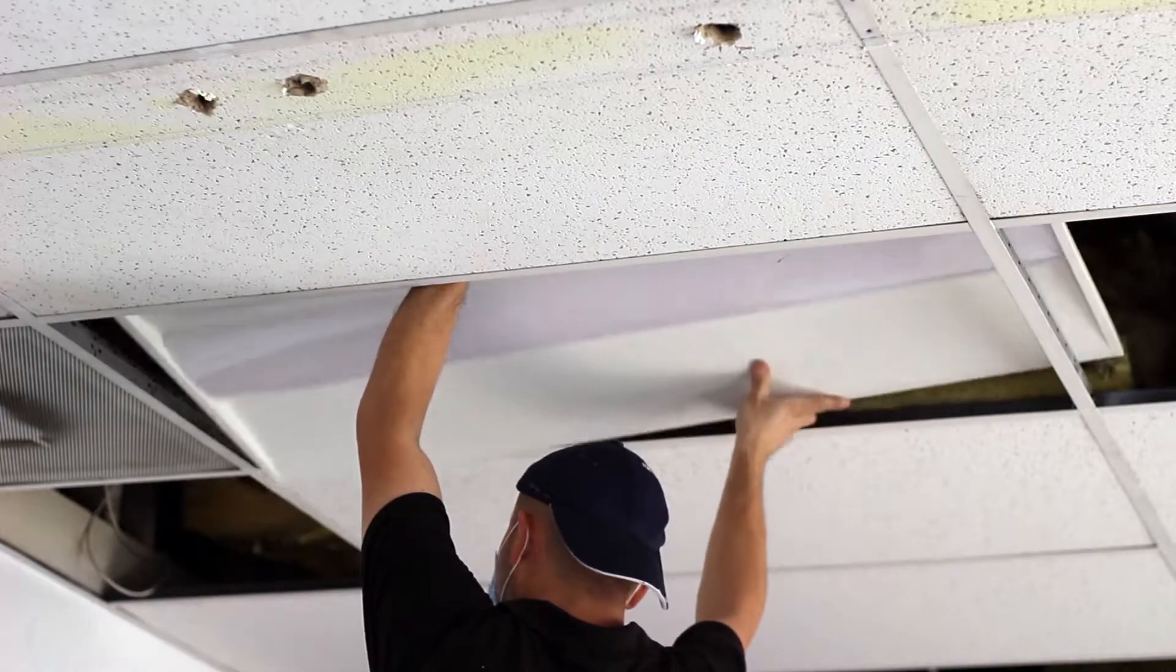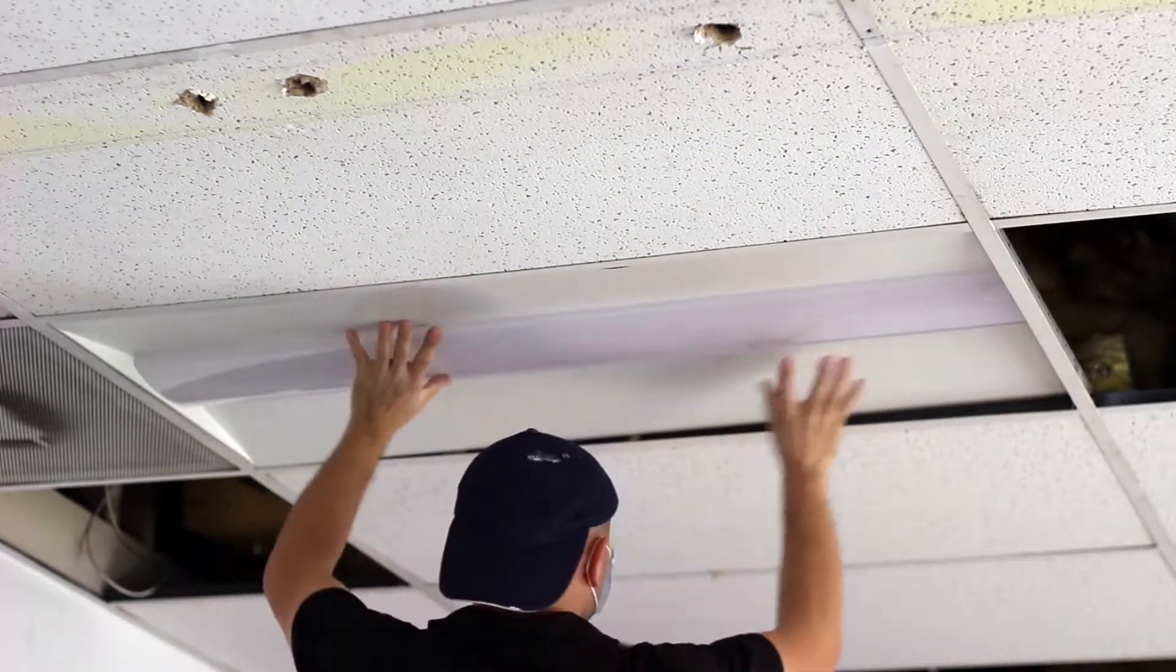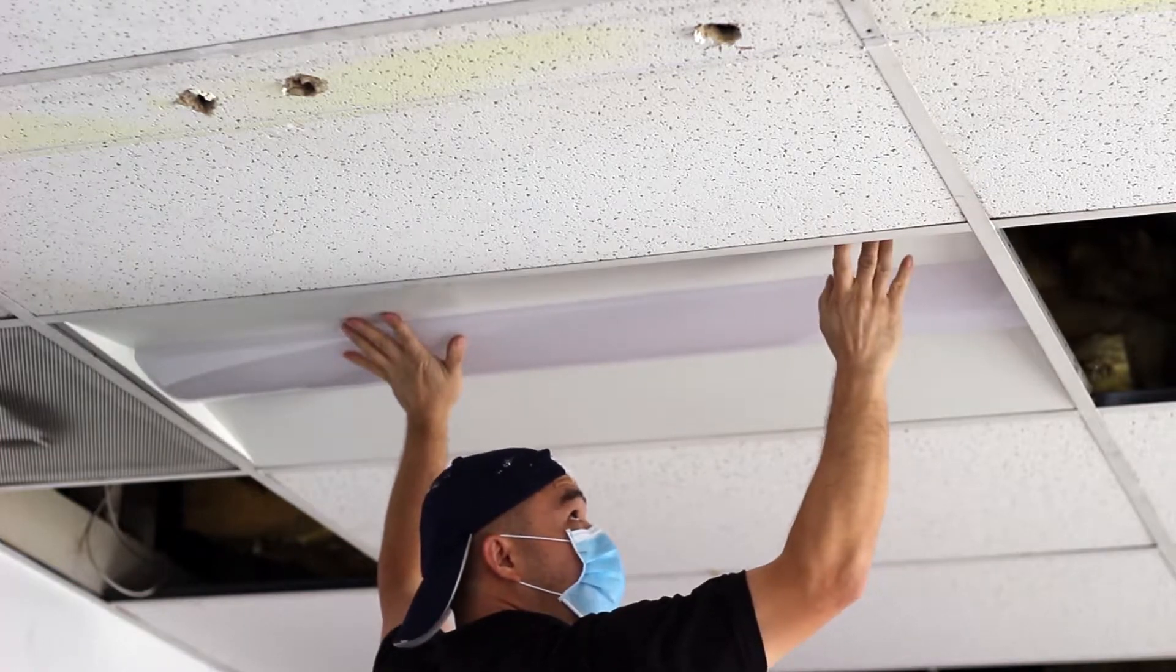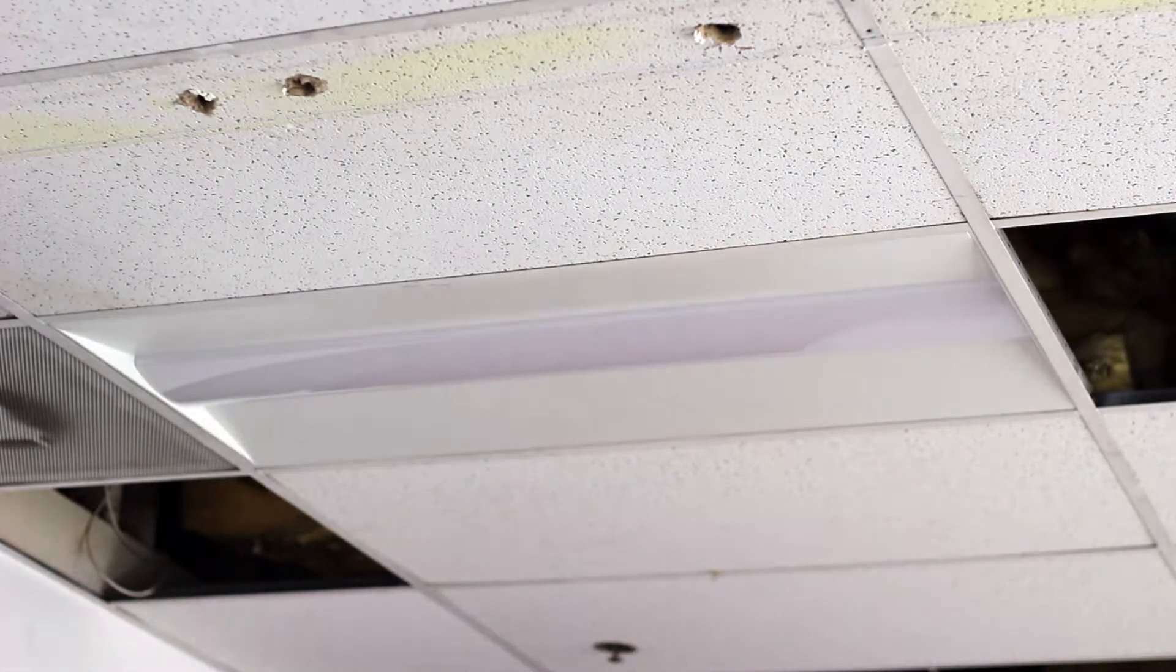Install the LED troffer onto your ceiling. Mount the indicator panel on your wall or on your ceiling.